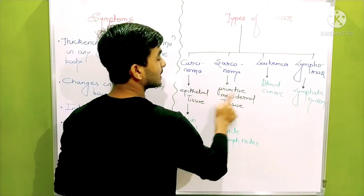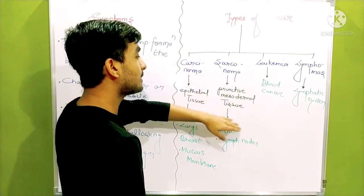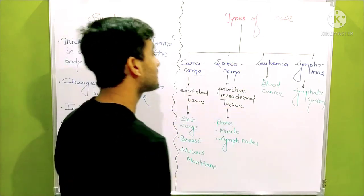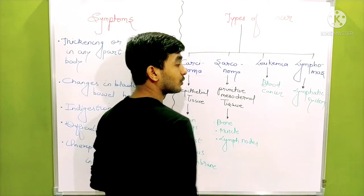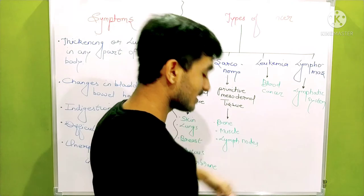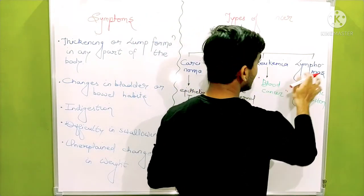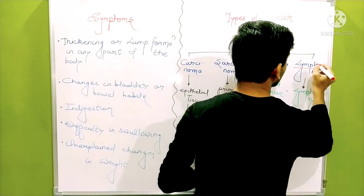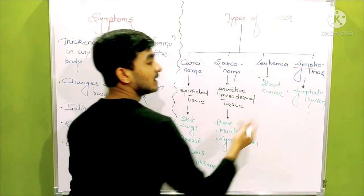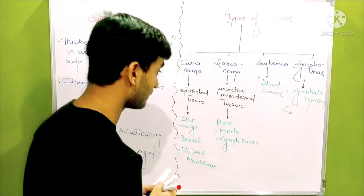Sarcomas include primitive mesodermal tissue - the tissue which are formed primitively, first as mesodermal origin. These are bone, muscles and lymph nodes. Next is leukemia. Leukemia stands for blood cancer - that's a simple term used for blood cancer. Then lymphoma - it suggests with its name that lymph. It affects the lymph system. The cancer of the lymph system would be called as lymphomas.